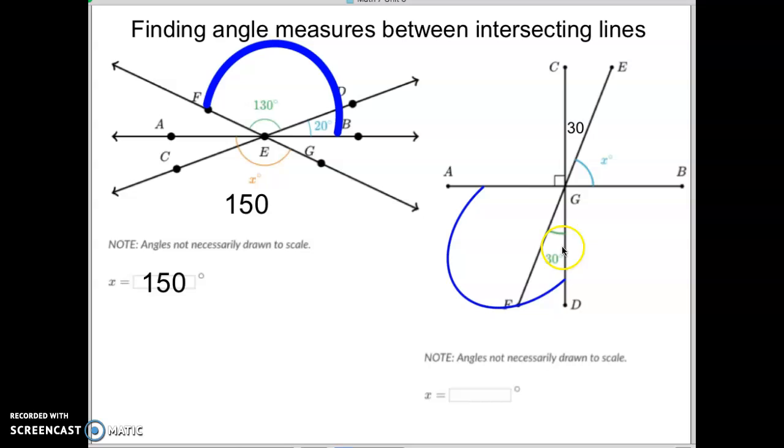Well, if this is 90 degrees and this one is 30 degrees, then what's the measure of this angle? It would be 60. And if this side is 60, then this side is also 60 degrees. So hopefully that makes sense to you.